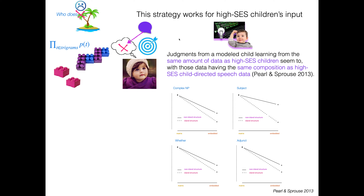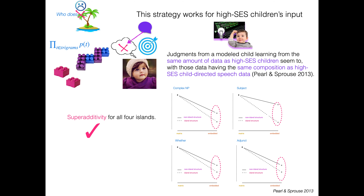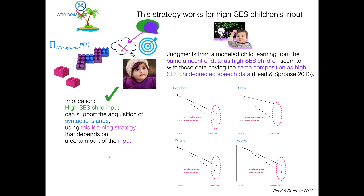When we use this approach on high SES children's input — learning the building blocks for WH dependencies using those syntactic trigrams from the kind of input that we think high SES children are exposed to, and this comes from prior work by Pearl and Sproul's 2013 — they get the same judgment pattern. If we give the model input with the same distribution of WH dependencies as the data that high SES children get, for each of our four island types we see that super-additive pattern, where the island-crossing dependency is extra bad. Super-additivity is present for all four islands, and we can interpret this as the high SES child input supporting the acquisition of this knowledge about syntactic islands using this learning strategy that depends on a certain part of the input.